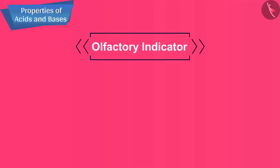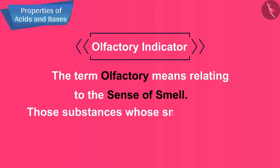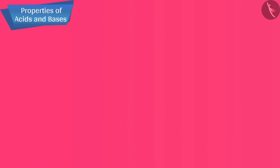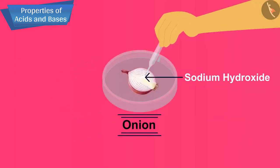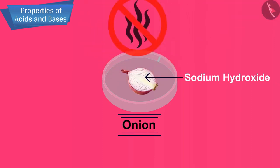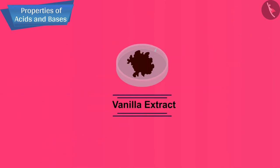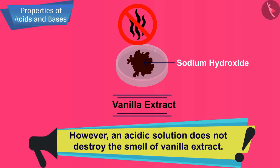There is one more type of indicator: the olfactory indicator. The term olfactory means relating to the sense of smell. Those substances whose smell changes in acidic and basic medium are called olfactory indicators — for example, onion and vanilla extract. Onion has a characteristic smell; if a basic solution like sodium hydroxide is added to onion, the smell cannot be detected. However, an acidic solution does not destroy the smell of onion. Vanilla extract has a characteristic pleasant smell; if a basic solution like sodium hydroxide is added to vanilla extract, we cannot detect its smell. However, acid cannot destroy the smell of vanilla extract.